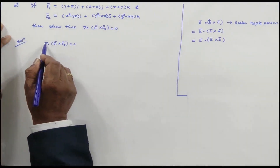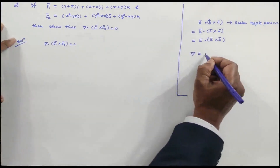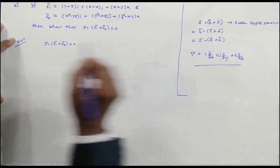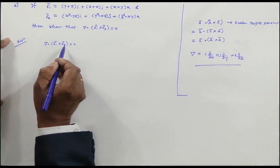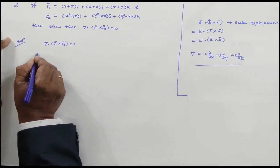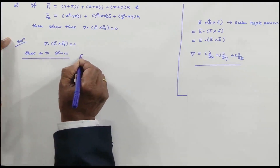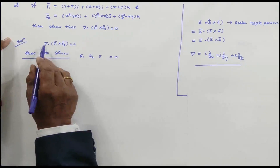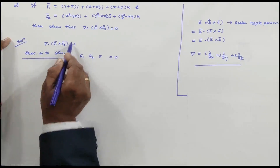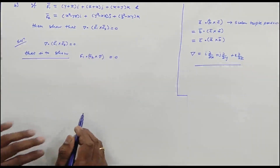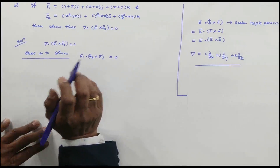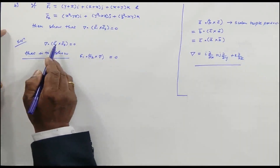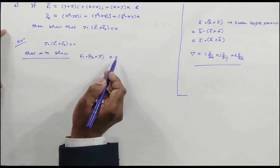Using the scalar triple product property, del · (F̄₁ × F̄₂) = F̄₁ · (del × F̄₂) = F̄₂ · (del × F̄₁). We can choose to compute del × F̄₂ (the curl of F̄₂). Also note that F̄₂ × del = −(del × F̄₂) by the anti-commutative property of cross products.